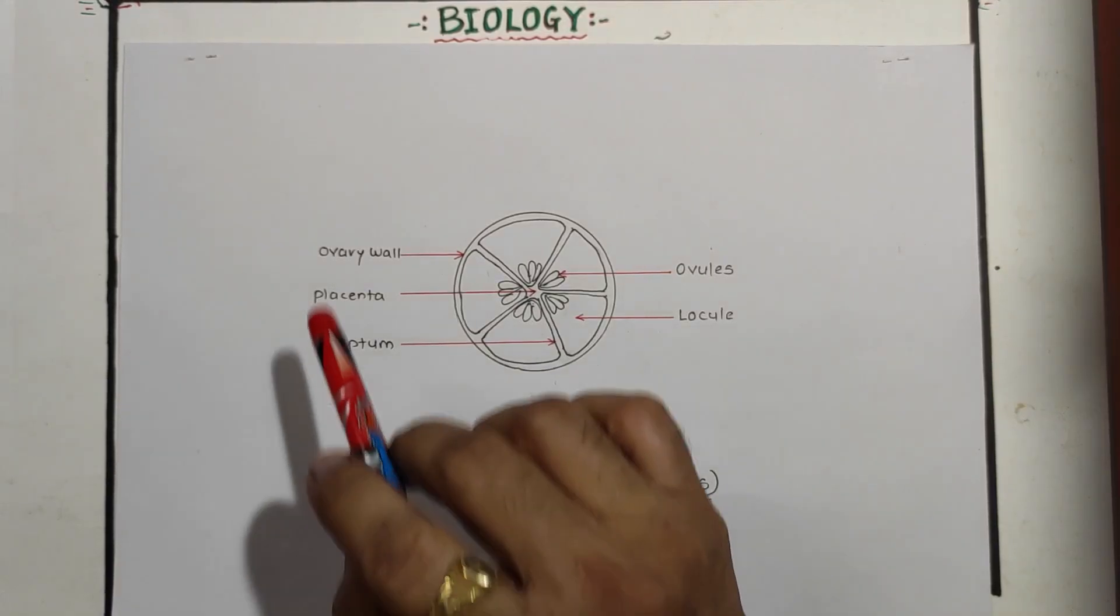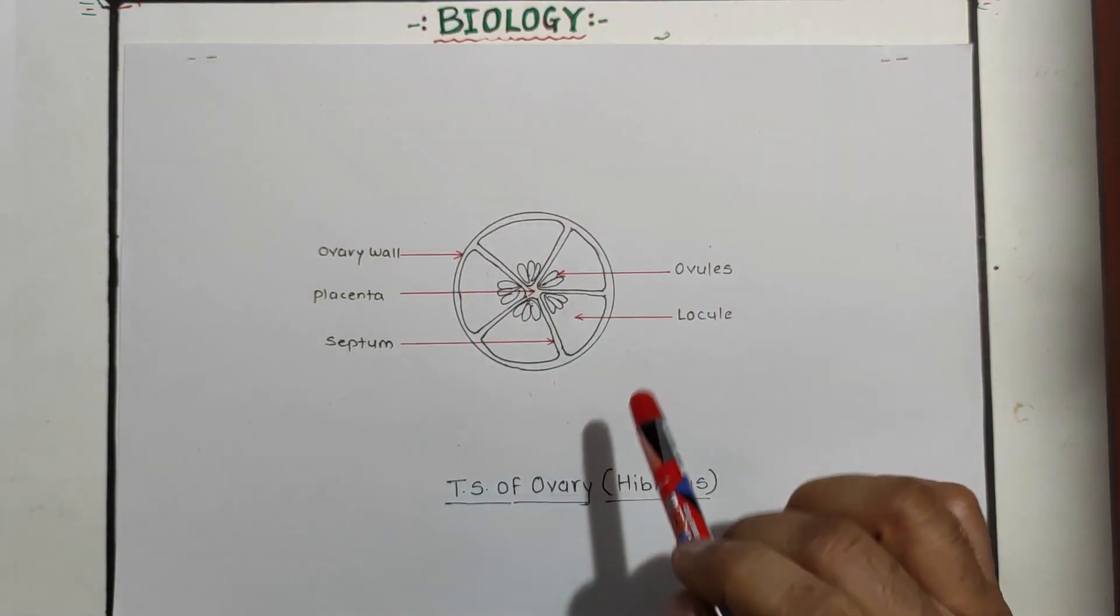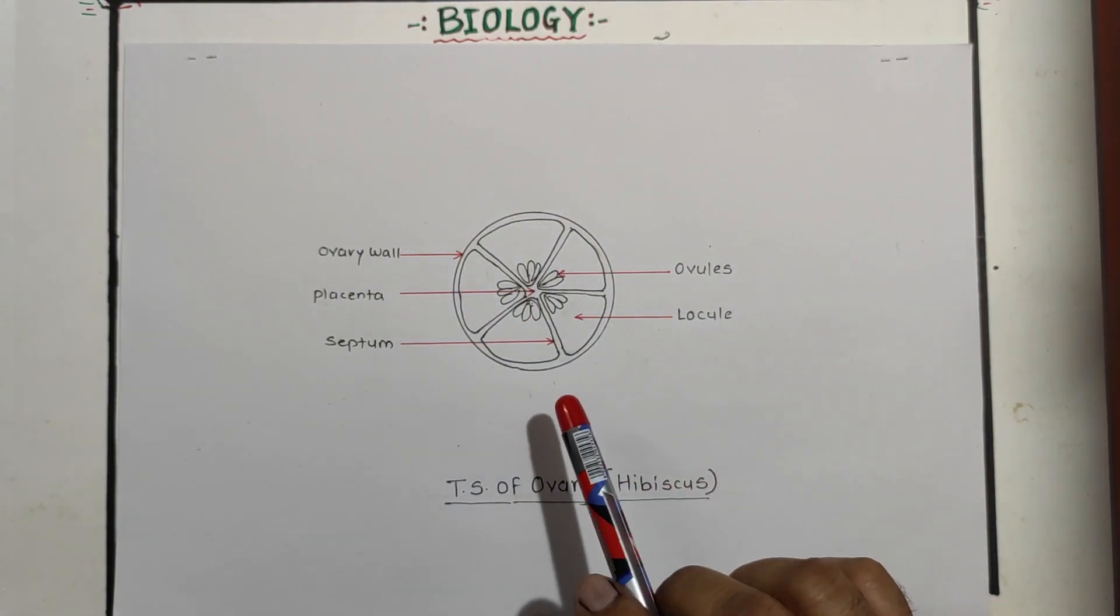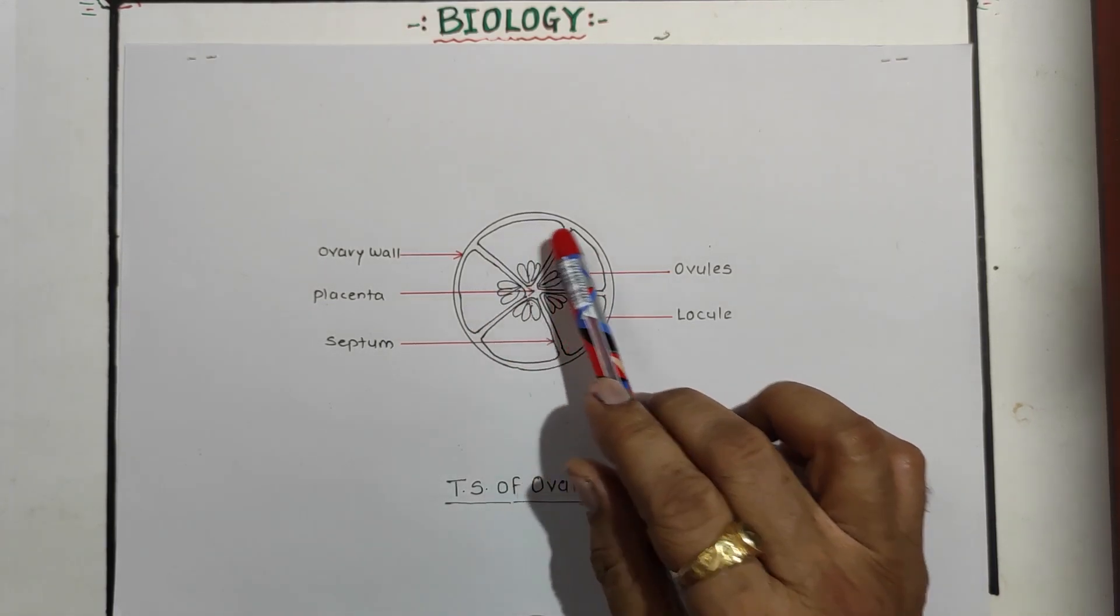This is a complete diagram of T.S. of ovary of hibiscus flower. This diagram is compulsory during the practical exam time for one mark. Just remember here you have to draw the five locules always. Remember, as it is pentalocular, that's why you have to draw five locules properly.